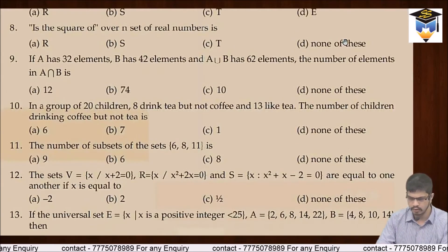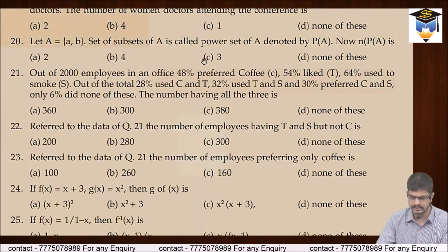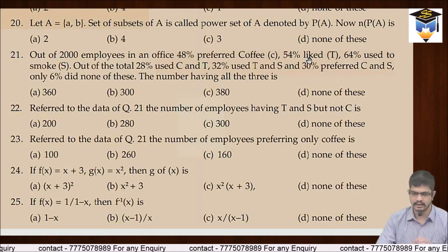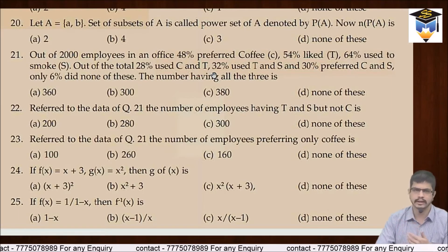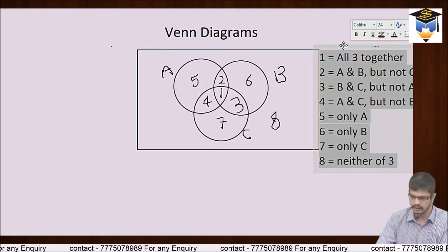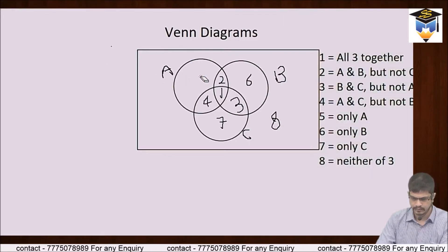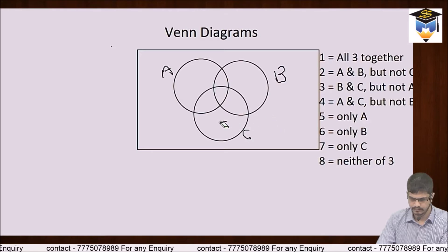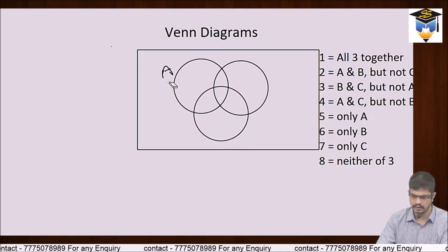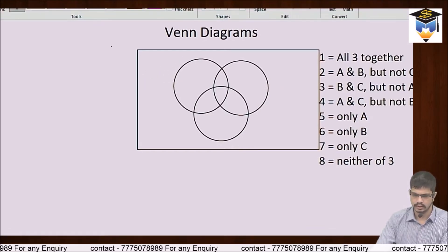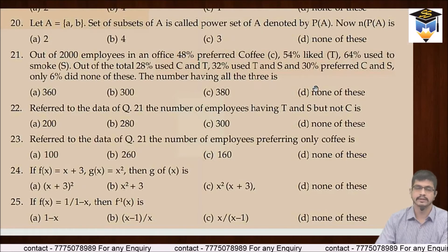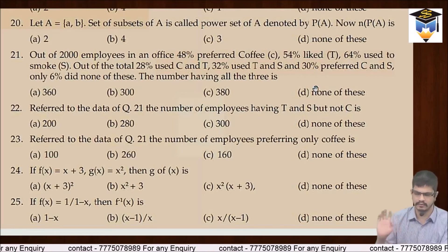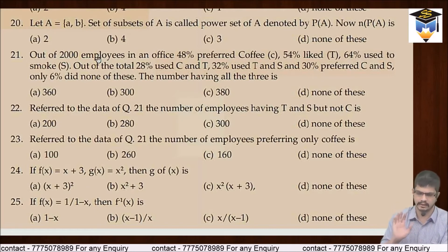Let's go to the module. Module mein humaare ek problem hai — tea coffee waala. Isme kya diya hua hai: 48% prefer coffee, 54% like tea, 64% like smoke. Kuch aur data bhi diya hai. Toh kya karte hain, sabse pehle hum in numbers ko A, B, C ki jagah tea, coffee aur smoke likhenge. Numbers percentages mein hain, toh hum percentages se calculate karenge aur phir 2,000 se multiply karenge.